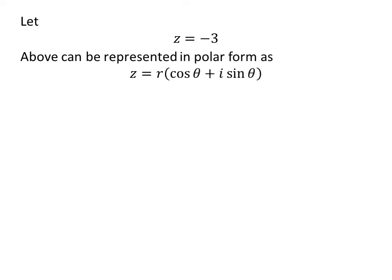Let us assume z be equal to minus 3. The complex number z can be represented in polar form as r times cosine of theta plus i times sine of theta.